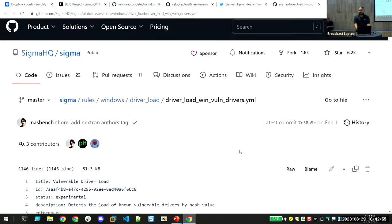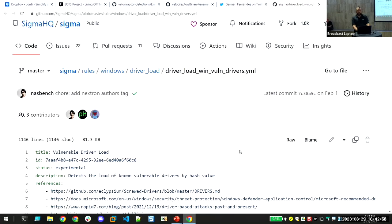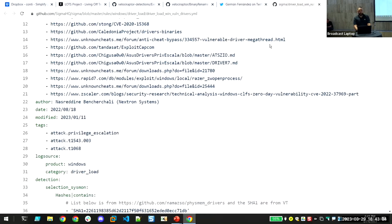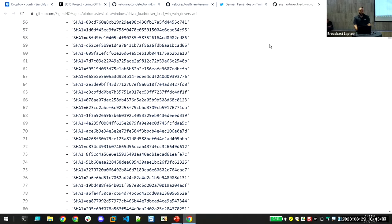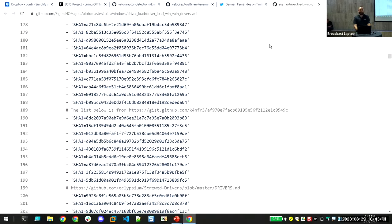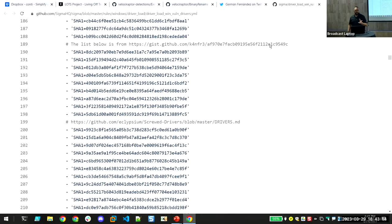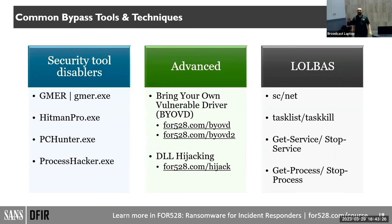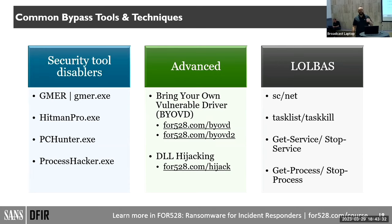There's also the BYOVD project with articles, file hashes, and file names to hunt for throughout your environment. On the right-hand side, threat actors also just use service control, task list, and PowerShell commands — they look for processes running and try to kill them. If they have admin privileges and can kill your AV by just killing the process name, now they can do whatever they want.